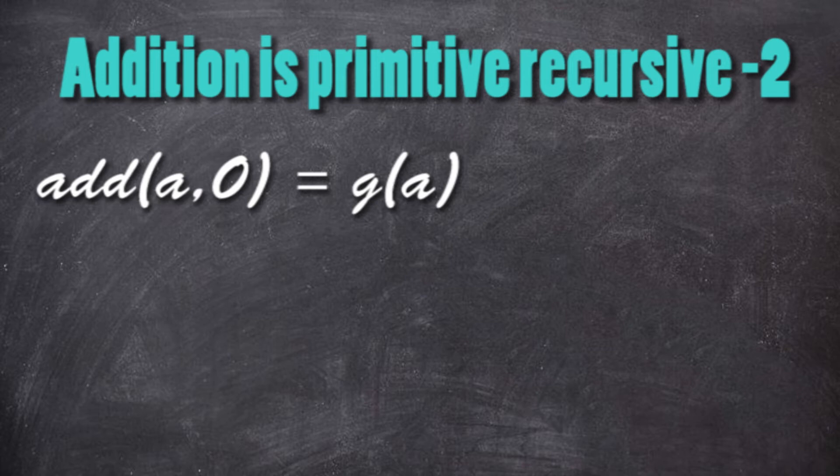Finally, A and 0 equals to A, but we cannot write just A. We can see that it's the first parameter of the function g, so we have id₁¹. So g of A equals to id₁¹.